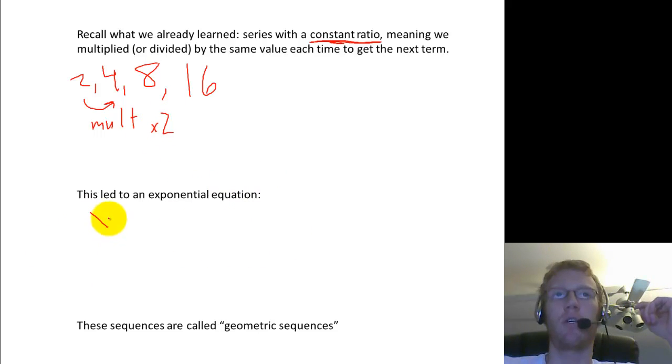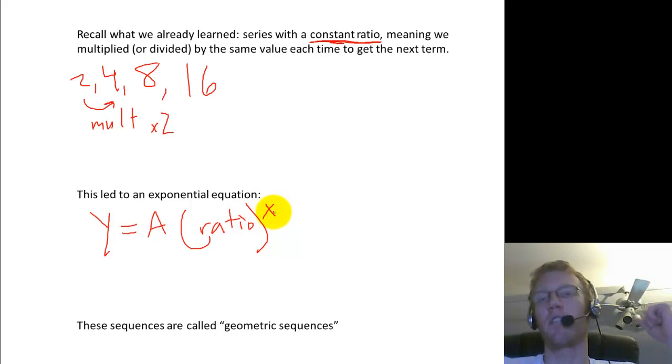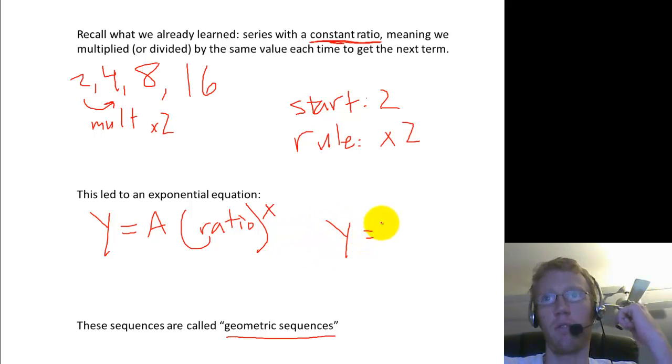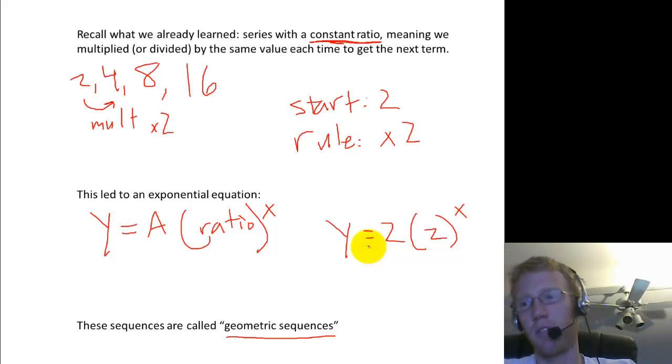So the rule to get from one thing to the next was like multiply times 2 or whatever it was. And that led to an exponential equation. If you remember, y equals a times the ratio to the x power, where x was the number of times you multiplied, ratio is the number you multiplied by each time, a was the starting value, and y was the ending value. So, you know, this is just to refresh your memory on these kind of sequences where you have a list of numbers, you have a starting value, say for this one it would be 2, and you have a rule, in this one it would be times 2, and that could lead you to this equation, y equals 2 times 2 to the x, something like that. And then you could find the 5th term, or the 7th term, or the amount of money you had in the account 10 years later, or something like that.